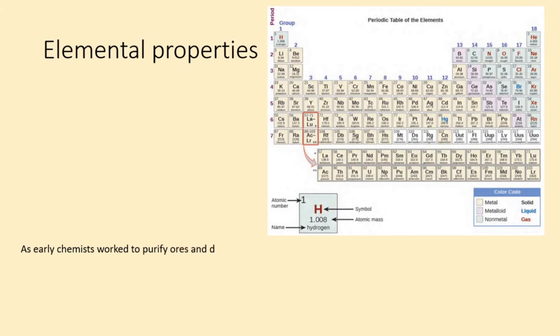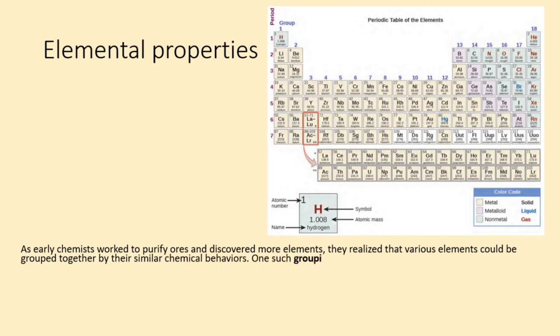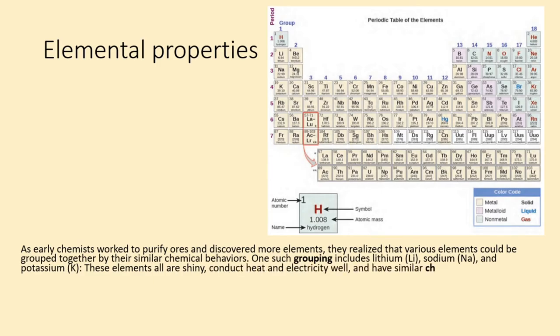Elemental properties. As early chemists worked to purify ores and discovered more elements, they realized that various elements could be grouped together by their similar chemical behaviors. One such grouping includes lithium (Li), sodium (Na), and potassium (K). These elements all are shiny, conduct heat and electricity well, and have similar chemical properties.